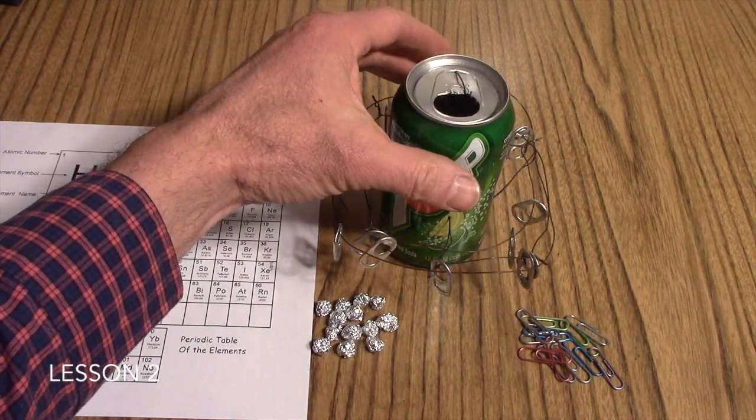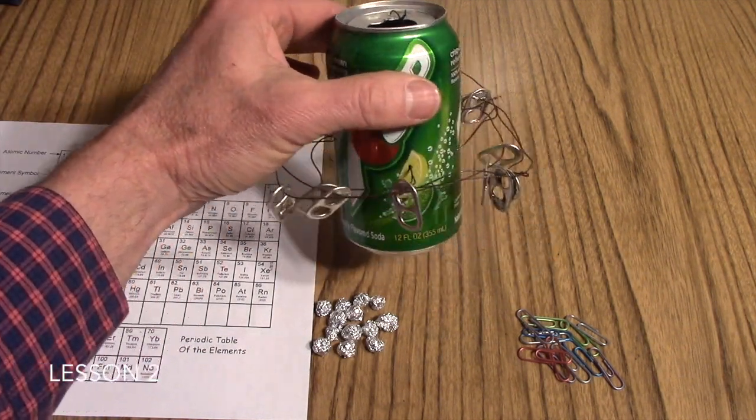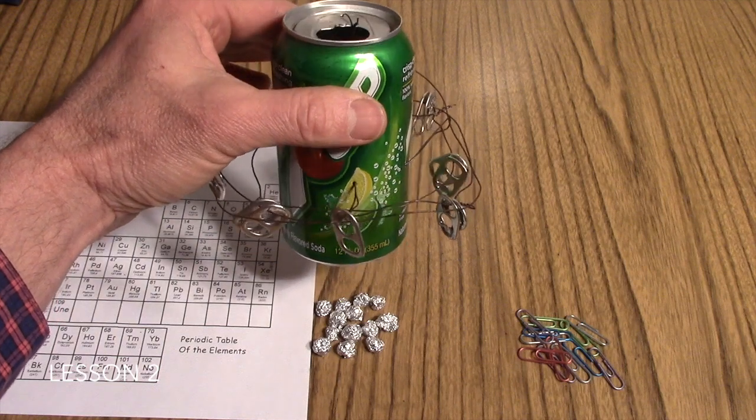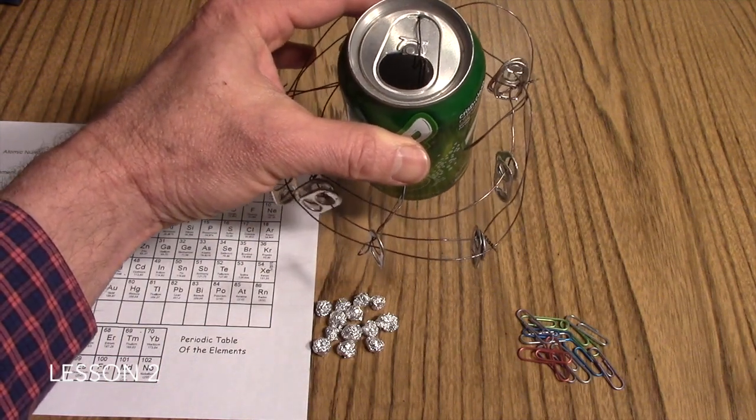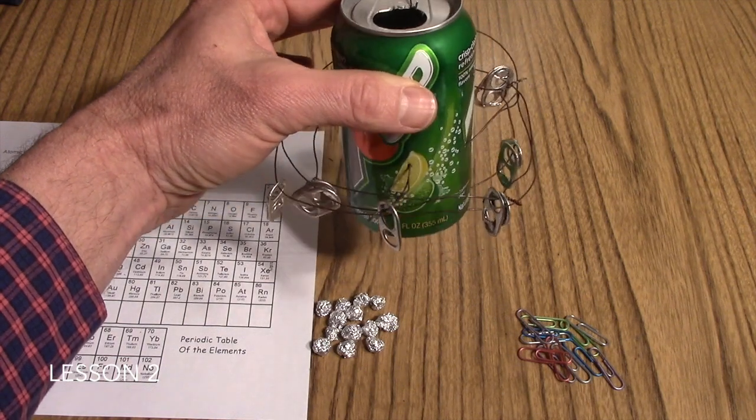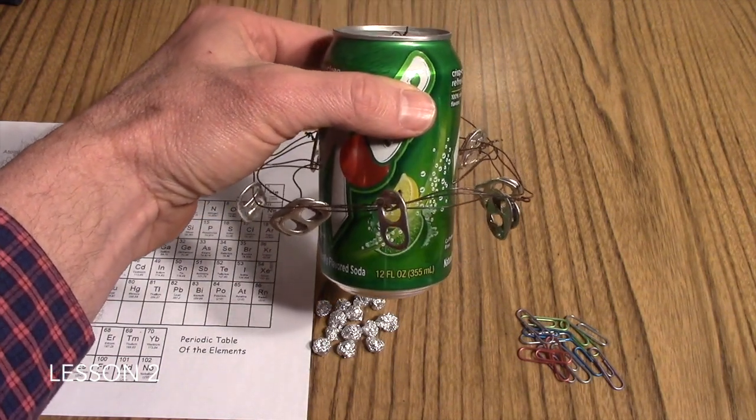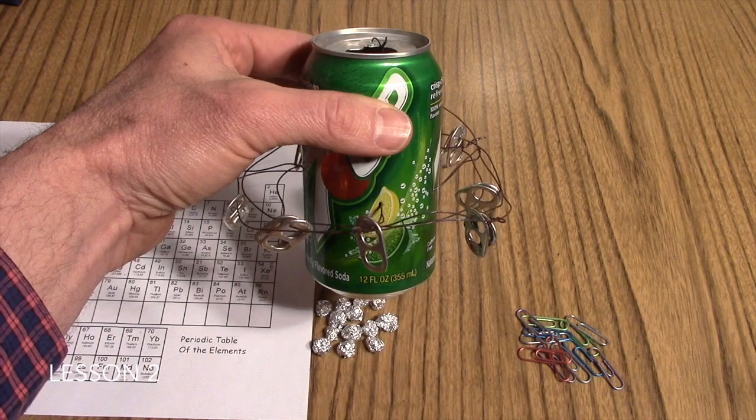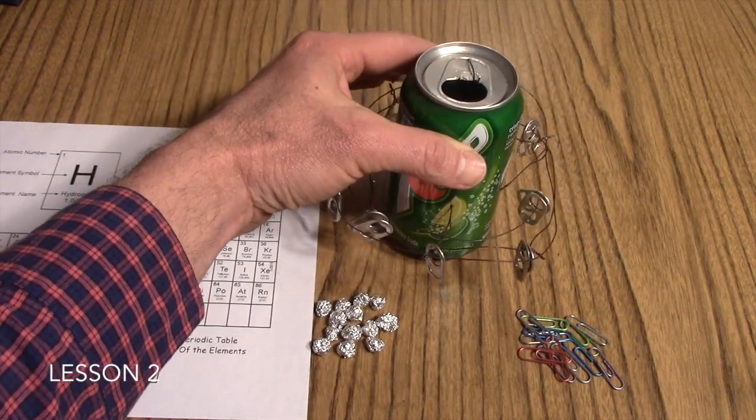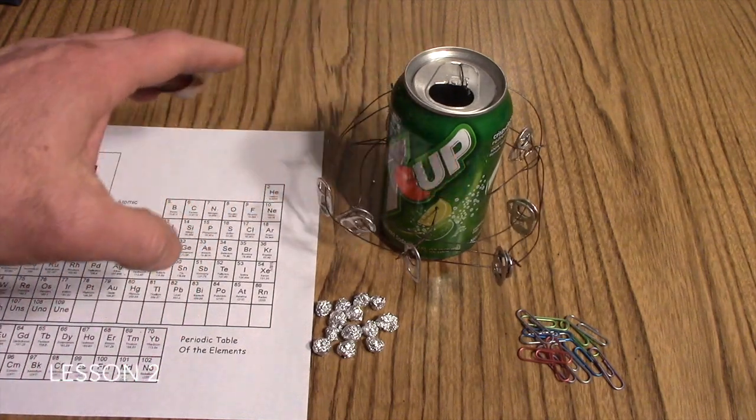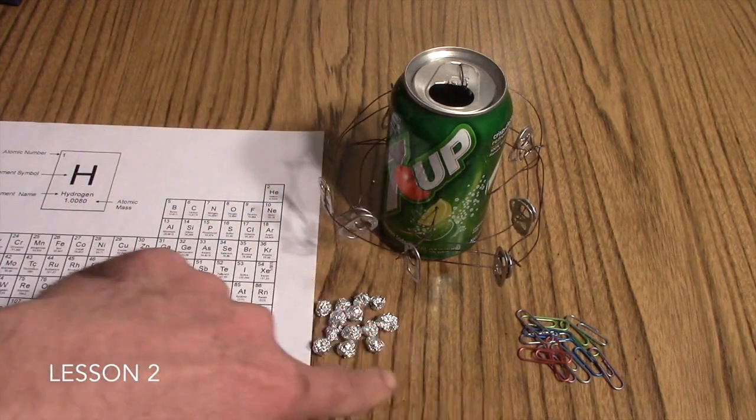The student then went about constructing their model using materials which represented something about their particular element. Most likely here, they found that aluminum was a lightweight metal and used for making pop cans. So to build their model, they've used components which are made up of aluminum.